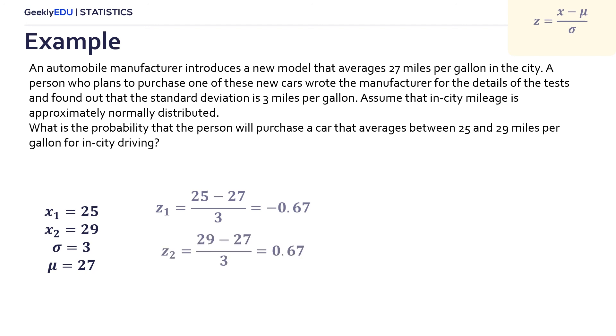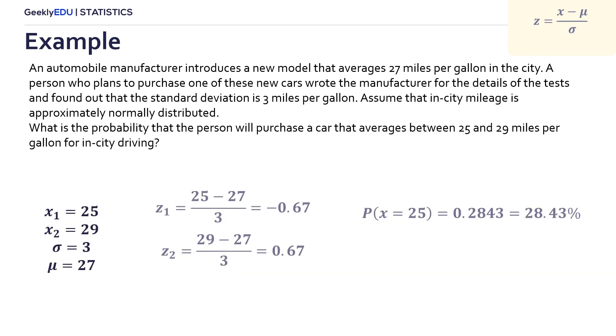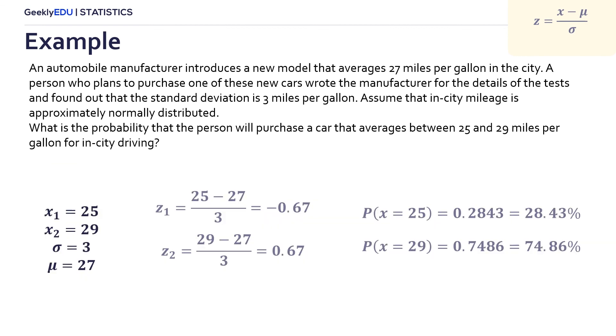Using the tables, the first probability is 28.43% and the second is equal to 74.86%. Finally, we have to calculate the difference between these probabilities and get that the probability of the car to average between 25 and 29 miles per gallon is 46.43%.